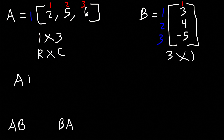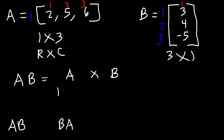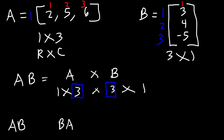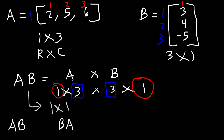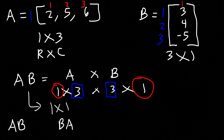If we multiply A by B, A is a 1 by 3 matrix and B is a 3 by 1 matrix. In order to multiply two matrices, the number of columns in the first matrix must equal the number of rows in the second matrix. The order of matrix AB is going to be 1 by 1, so we should have only one number in this matrix.